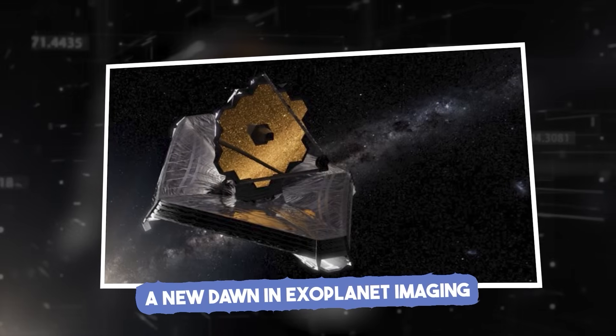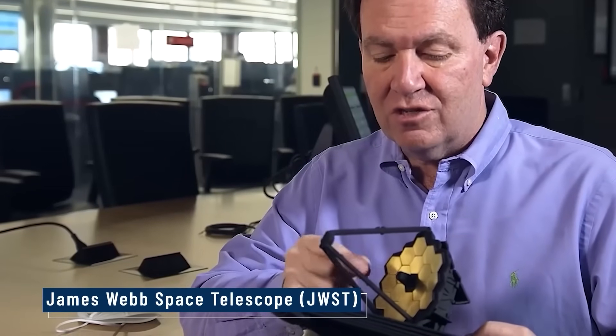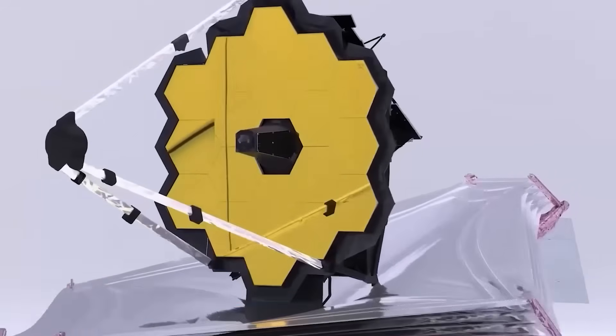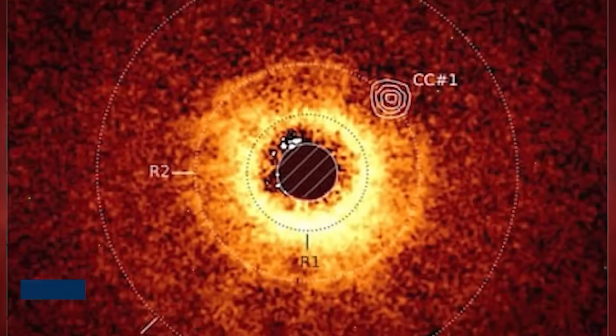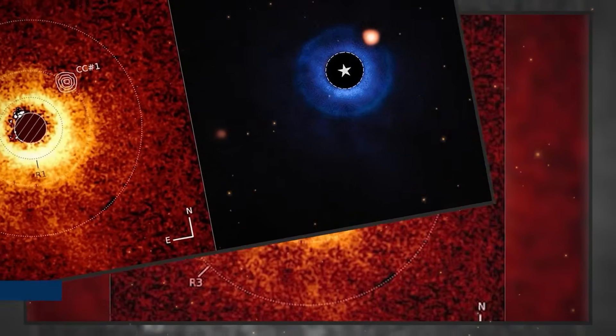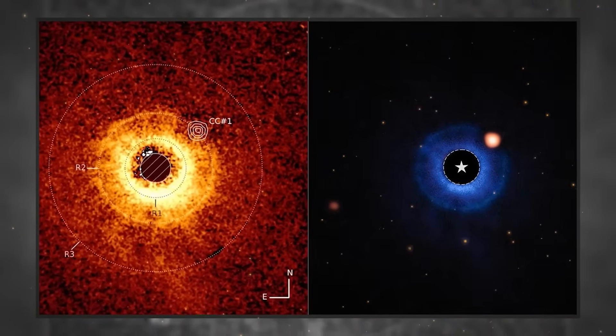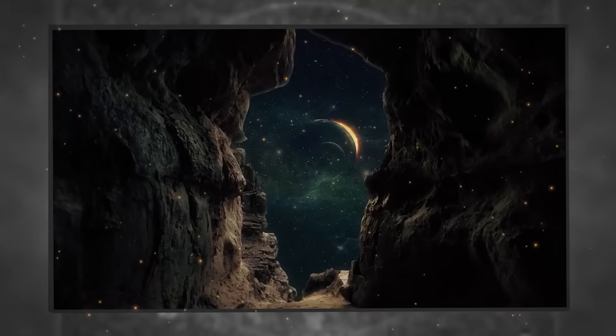A new dawn in exoplanet imaging. When the James Webb Space Telescope, JWST, captured its first-ever direct image of an alien world, TWA-7b, it wasn't just a photo. It was a groundbreaking moment, proof that we can now see planets around other stars, not just infer their existence.